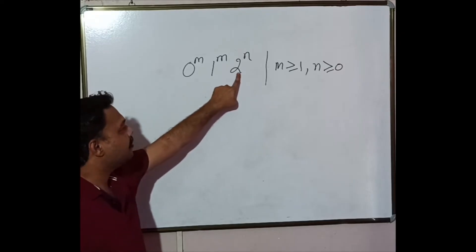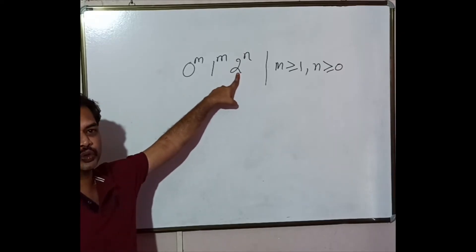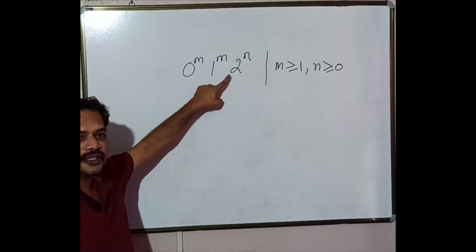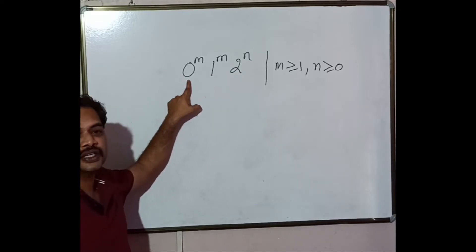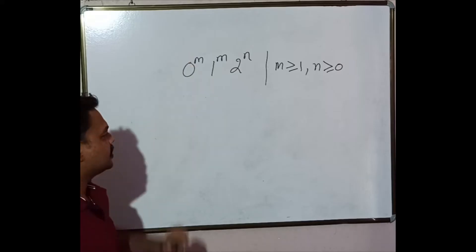And there may or may not be occurrences of 2s. That means occurrences of 2 is independent of occurrences of 0s and 1s. Now let us design CFG for this problem statement.